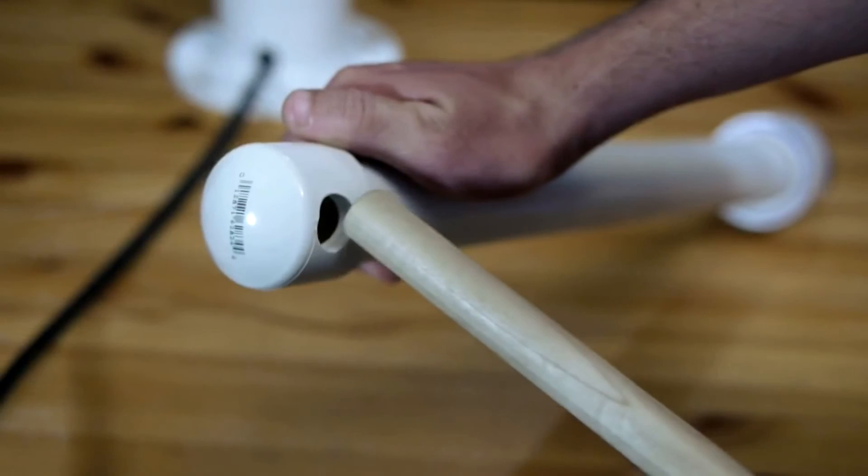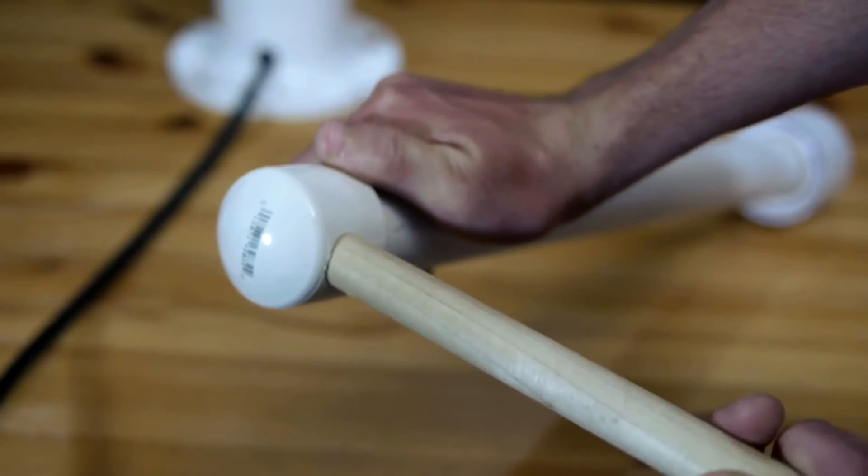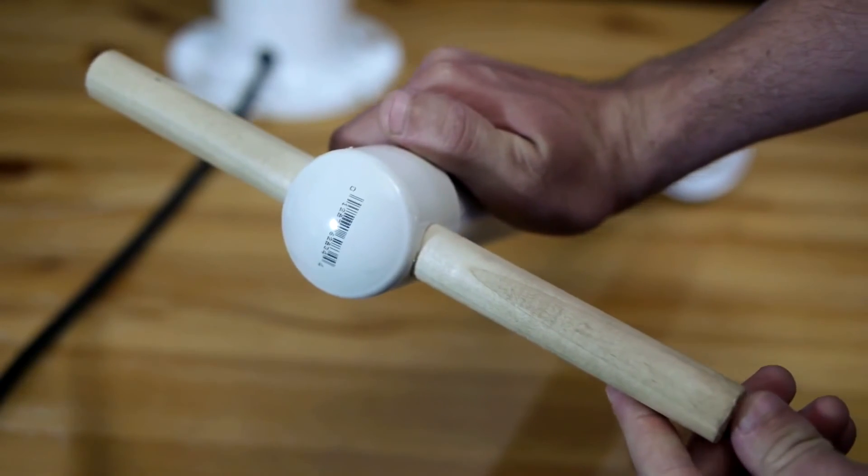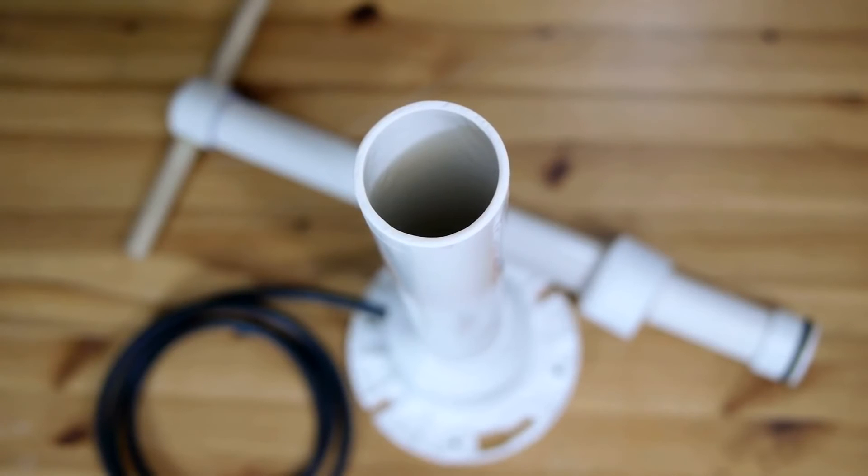For the handle, I use a three-quarter by ten-inch long dowel that is simply pushed into place. The shaft is now complete and ready to be inserted into the rest of the pump assembly.